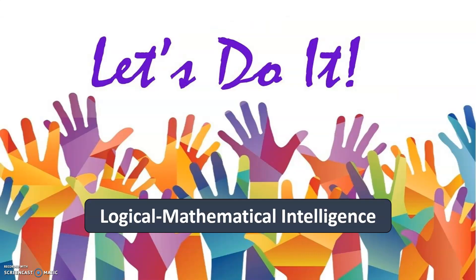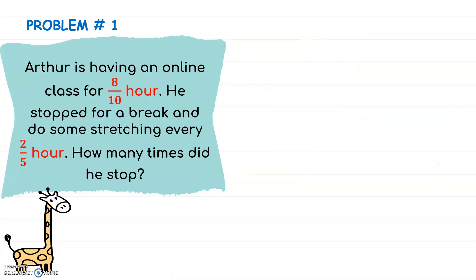Now, let's try to solve the following word problems. For problem number one, Arthur is having an online class for eight-tenths hour. He stopped for a break and did some stretching every two-fifths hour. How many times did he stop? We are asked to find how many times did he stop for a break. Arthur stopped every two-fifths hour, so we need to find how many two-fifths hours are there in the whole duration of eight-tenths hour.